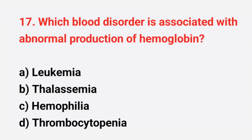Question number 17: which blood disorder is associated with abnormal production of hemoglobin? The right answer is option C.